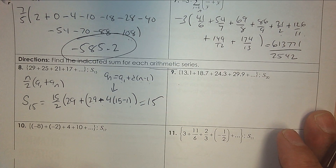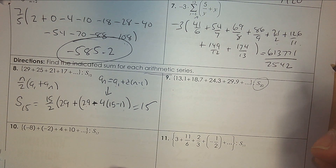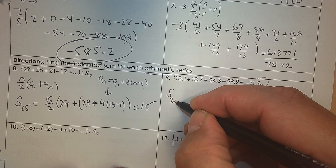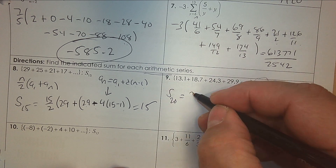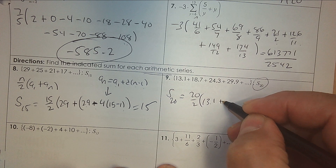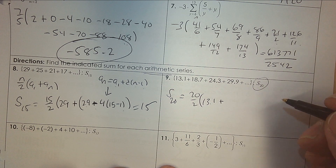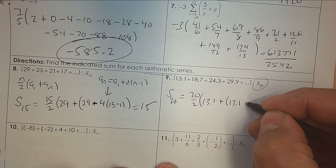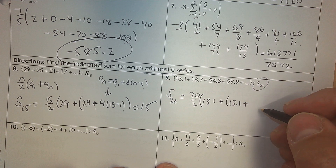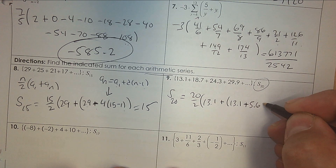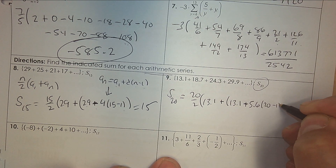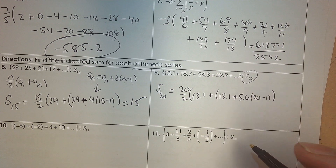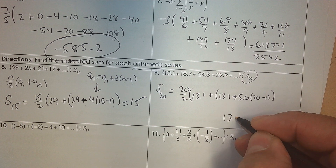Number nine — find the first 20 terms. How many terms do you have? Divided by 2. First term plus last term — I don't know it, so I'll go along here. The rule would be the first term 13.1, the common difference is 5.6, and then it's 20 take away 1. Put that all in your calculator in one step and you get 1,326.